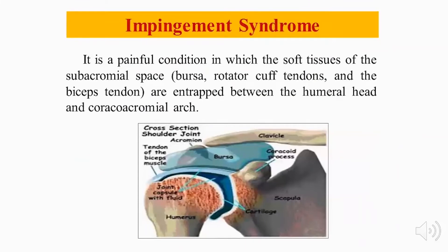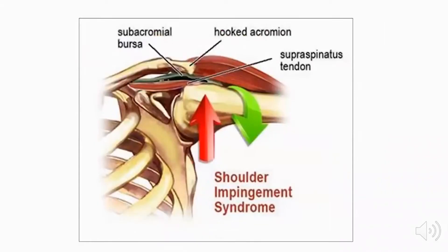The impingement syndrome is a painful condition in which the soft tissues of the subacromial space — the bursa, the rotator cuff, and the biceps tendon — become entrapped between the humeral head and the coracoacromial arch.